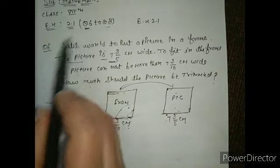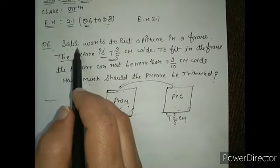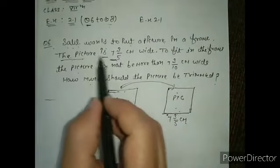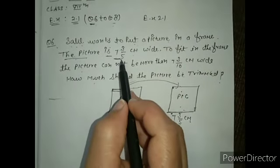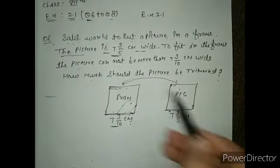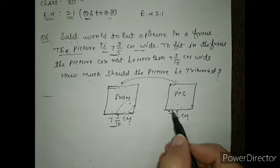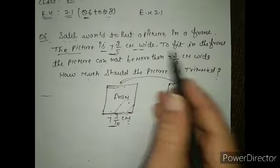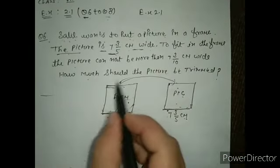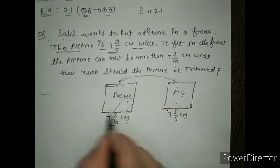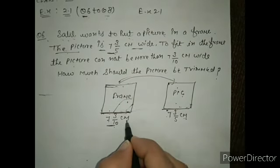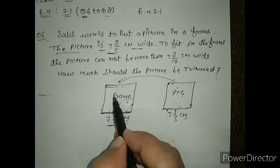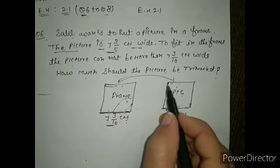In question number six, it is given that Lee wants to put a picture in a frame. The picture is 7 and 3/5 centimeters wide. A frame is given which is 7 and 3/10 centimeters wide. The picture has to fit in this frame, but the picture length is more.